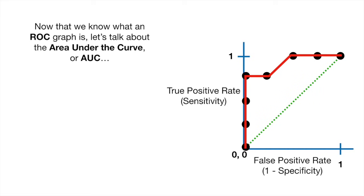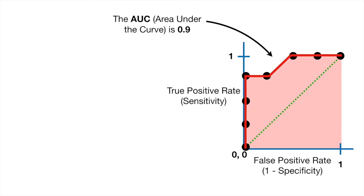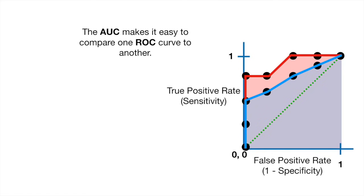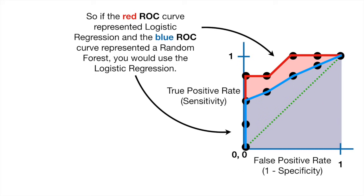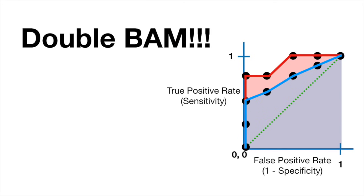Now that we know what an ROC graph is, let's talk about the Area Under the Curve, or AUC. The AUC is 0.9. The AUC makes it easy to compare one ROC curve to another. The AUC for the red ROC curve is greater than the AUC for the blue ROC curve, suggesting the red curve is better. So if the red ROC curve represented logistic regression and the blue represented a random forest, you would use the logistic regression. Double BAM!